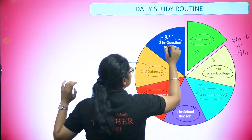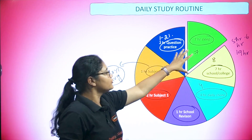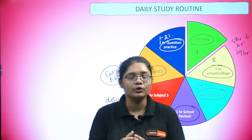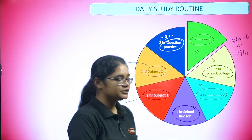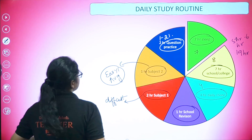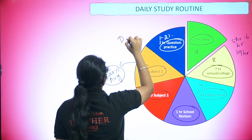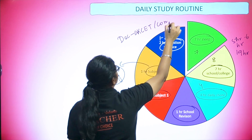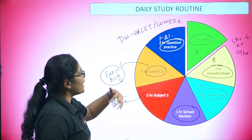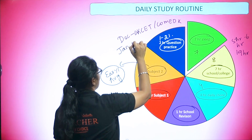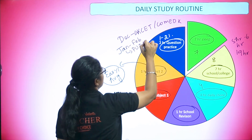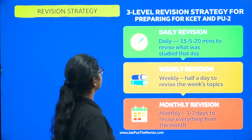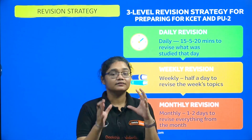With the remaining one to two hours, do intense question practice — this is very important. Only reading will not help at this stage; the more question practice you do, the better your concepts and hold over the subject will be. My suggestion is that until December, keep question practice KCT-focused or COMeT-K focused if you are writing that exam. From January and February onward, shift your question practice to PU2 board-focused.